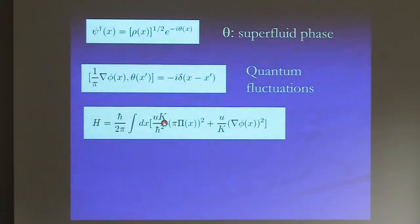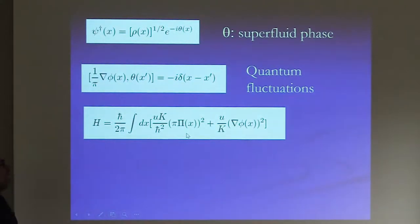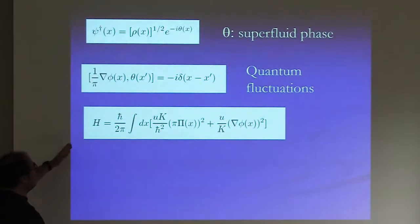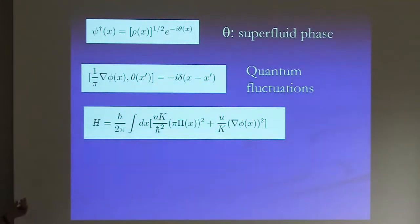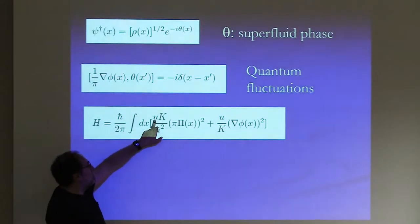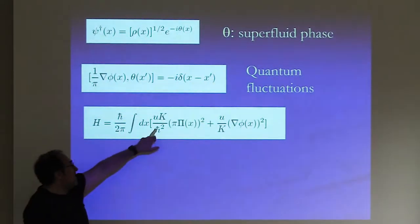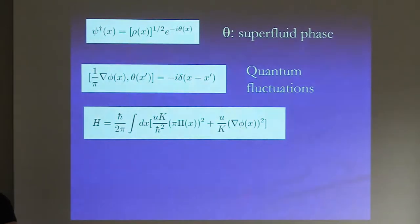Here are correlations in 1D. The single-particle correlation function for bosons decays as a power law with exponent controlled by K. The density-density correlation has a q=0 part (decaying as tau^2 / r^2) and, because of the higher harmonics, a part oscillating at 2*pi*rho_0 which decays as a power law with a non-universal exponent depending on K. So K controls the decay of all correlation functions in 1D, and the 1D system is essentially critical — it doesn't know whether it should order as a superfluid or a crystal.